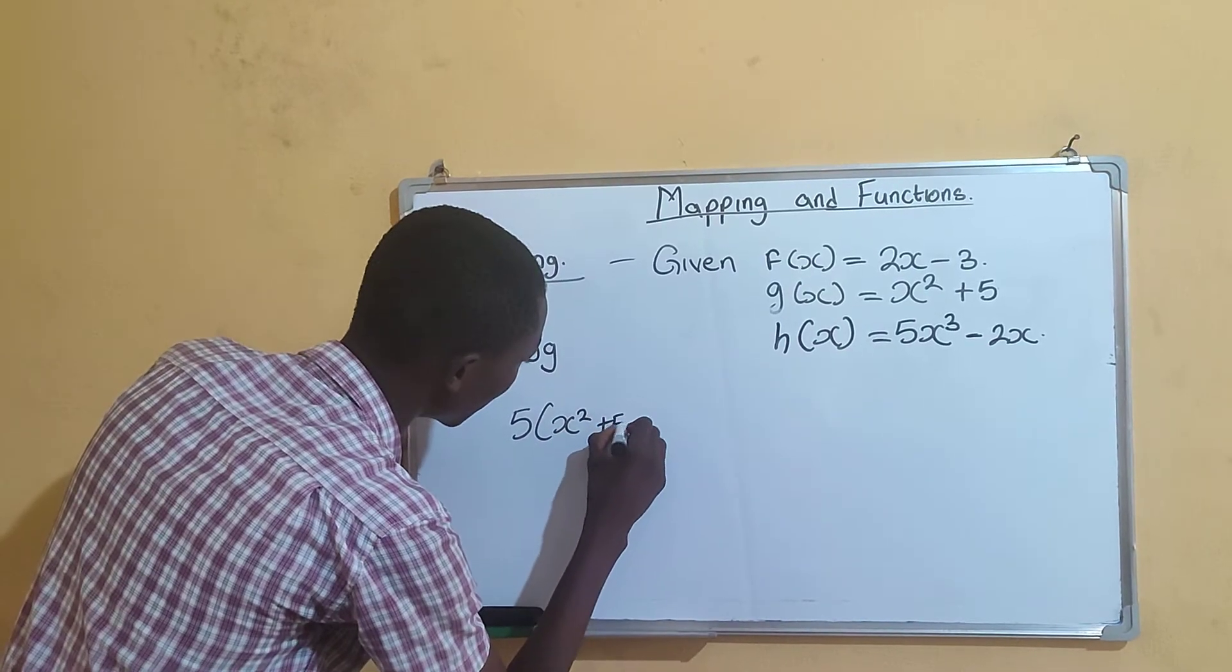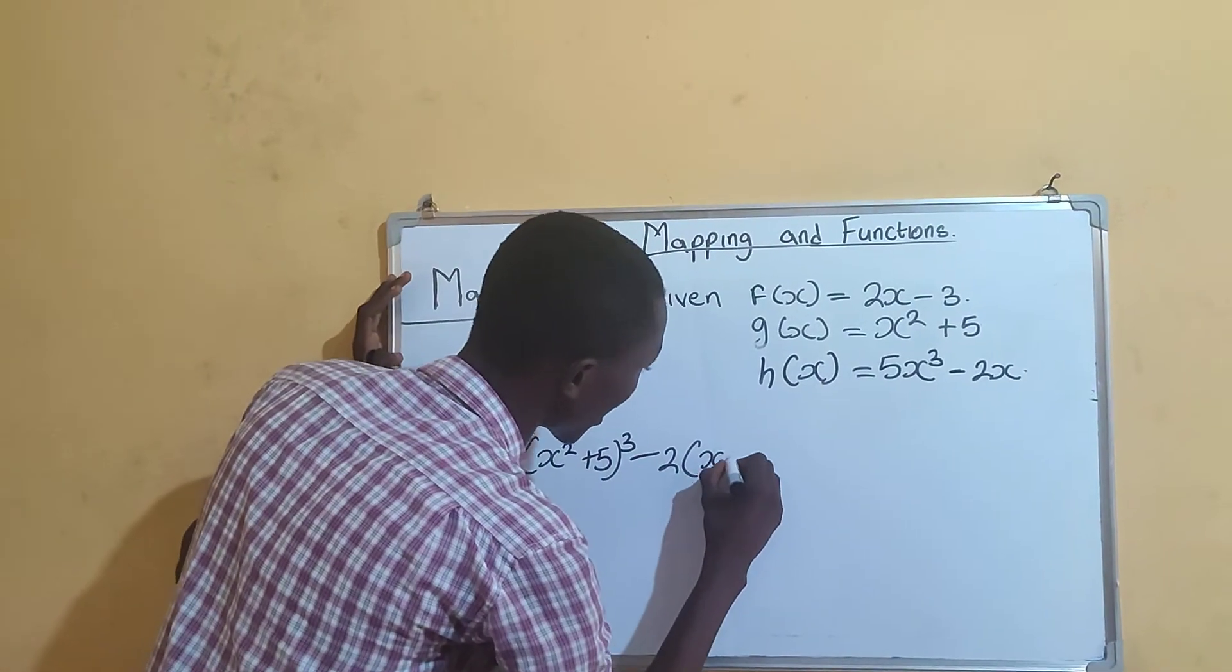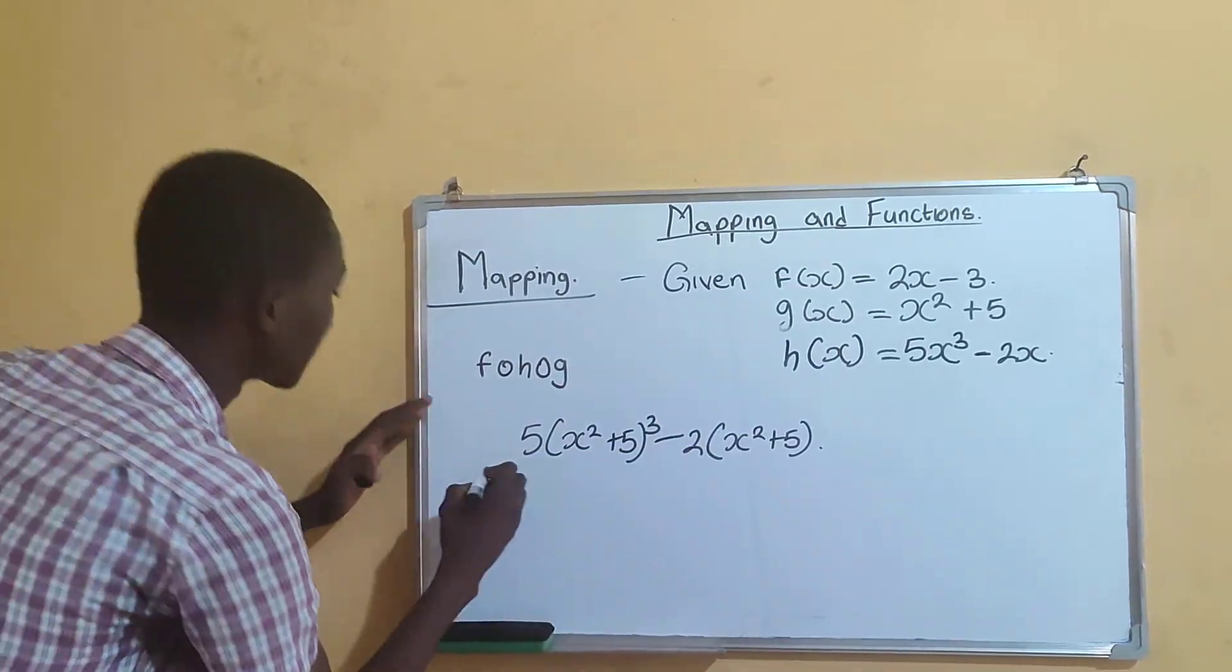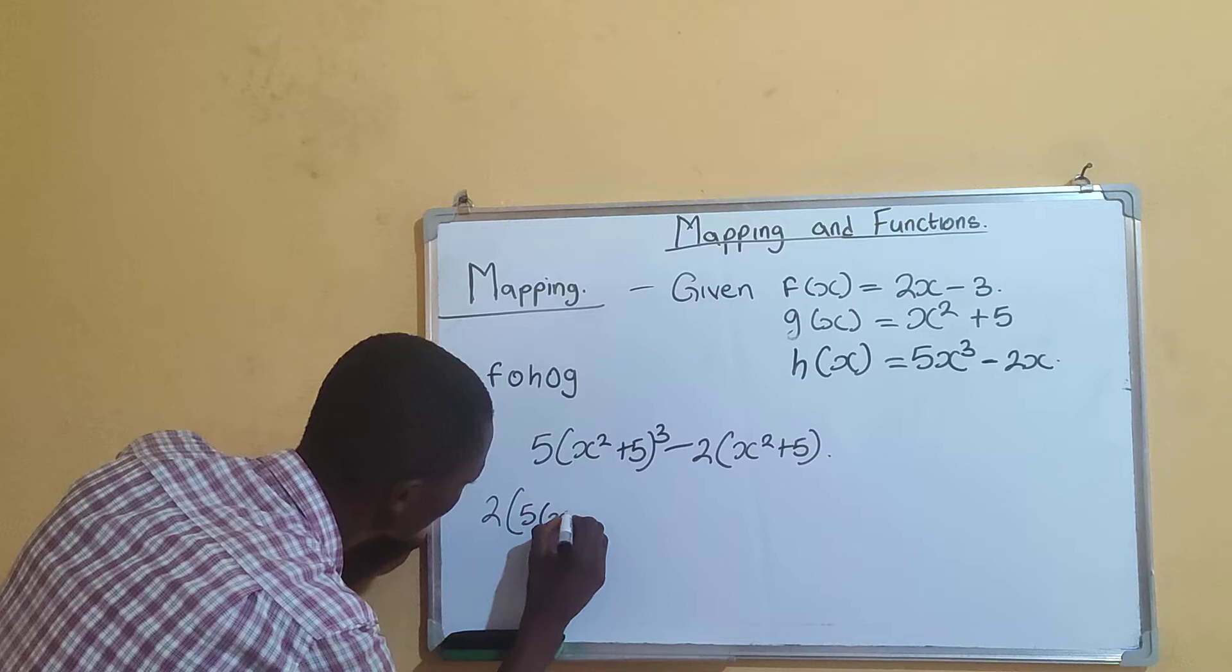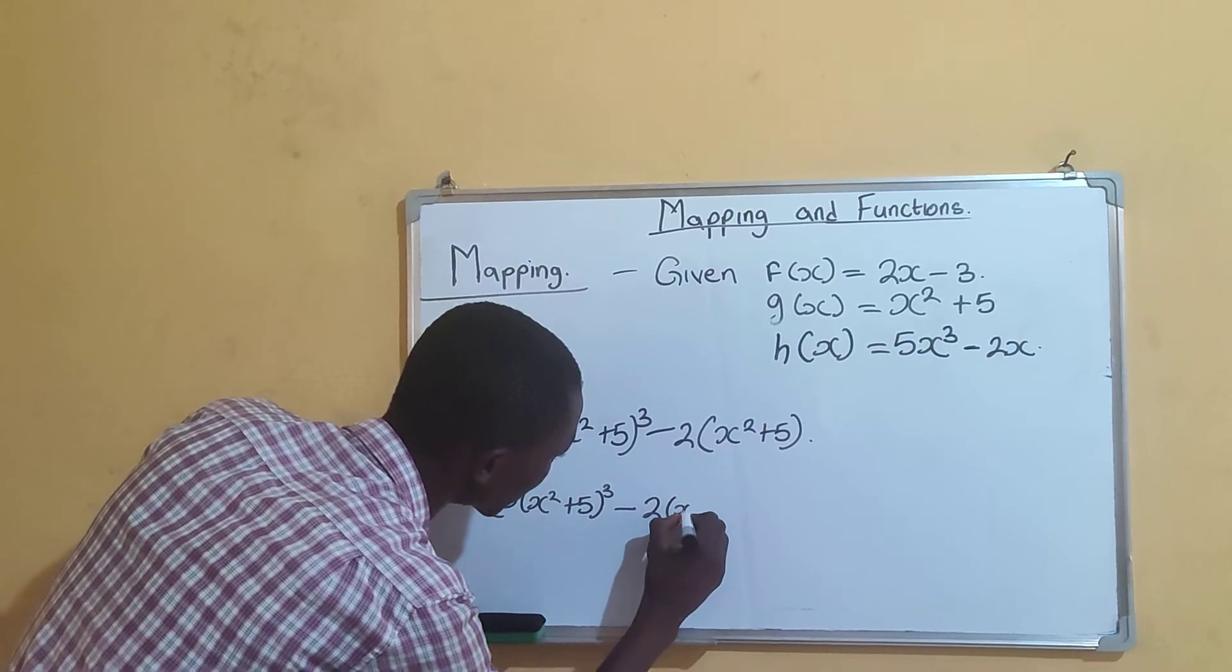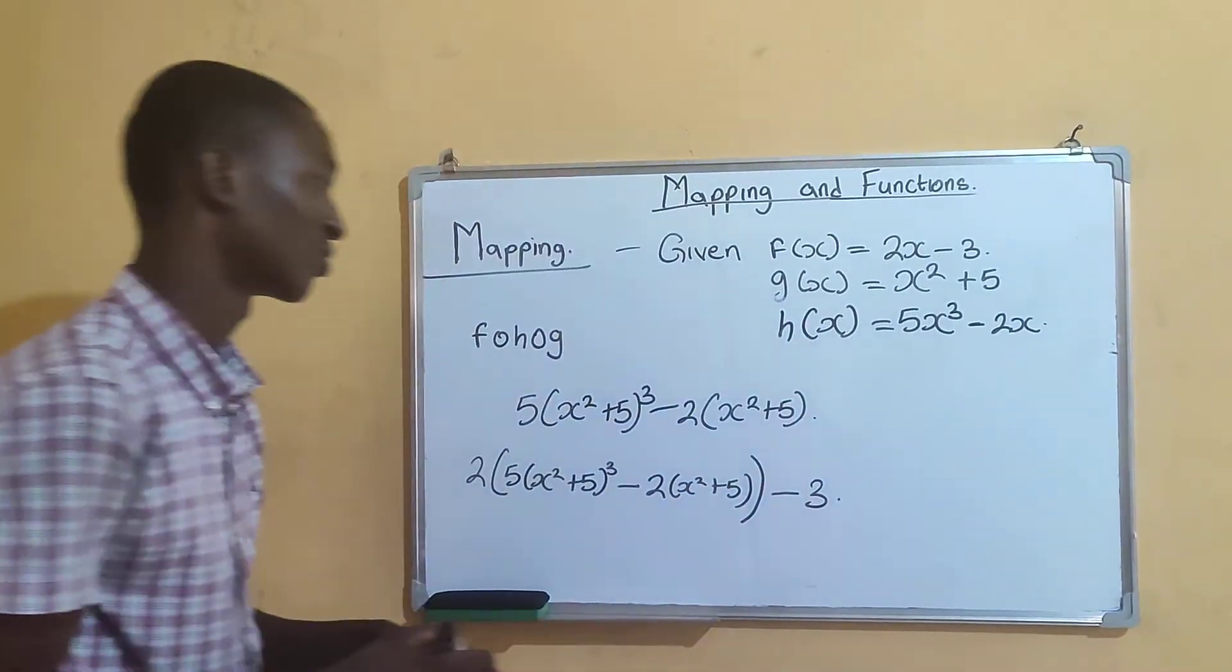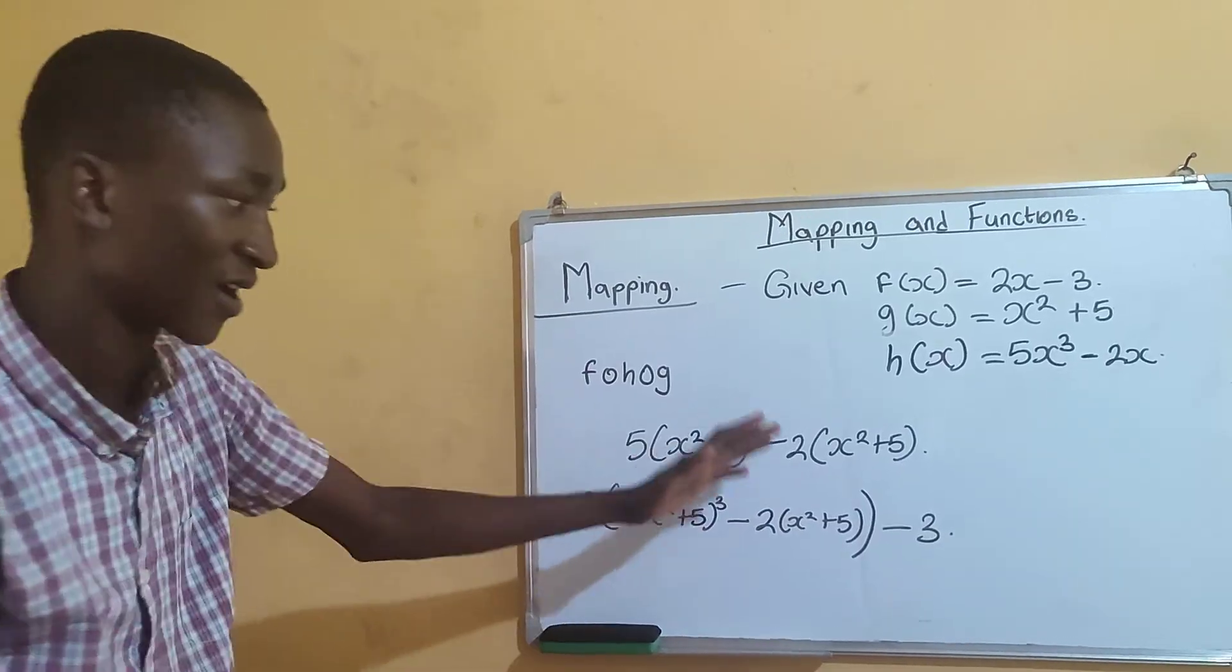That's this function. Then you put this whole thing into function f. So that's 2 into bracket of this whole thing: 5 into (x squared plus 5) raised to the power 3 minus 2 into (x squared plus 5), then this big bracket closed, minus 3. At your own leisure, you can solve this, expand it, whether using binomial expansion or normal expansion, then you get your final answer.